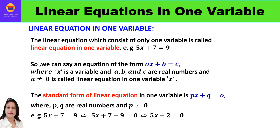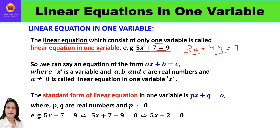What is a linear equation in one variable? A linear equation which consists of only one variable is called a linear equation in one variable. For example, 5x plus 7 equal to 9 has only one variable x with power 1, so it is a linear equation in one variable. Compare this to 3x plus 4y equal to 7, which uses two variables and is therefore a linear equation in two variables.